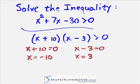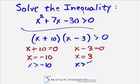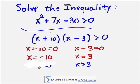So you would be tempted, since you know it's greater than, to say that x is greater than negative 10 and x is greater than 3 — just replacing the two equal signs with greater than signs. But actually this is completely wrong. You can't do it that way. So let's erase that and think about what we're really trying to do.